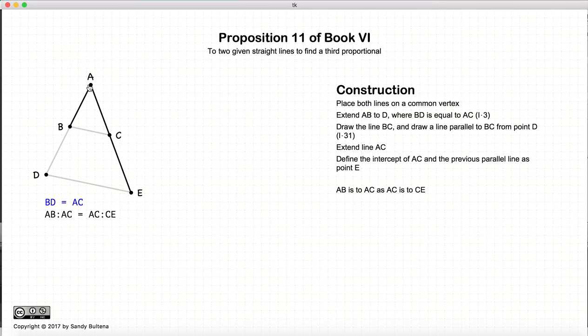And now the ratio of AB to AC is equal to the ratio of AC to CE. So how do we prove that this is actually true?